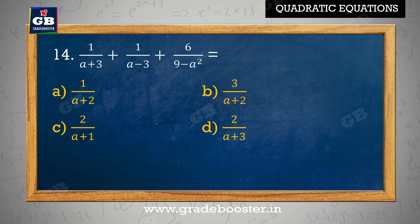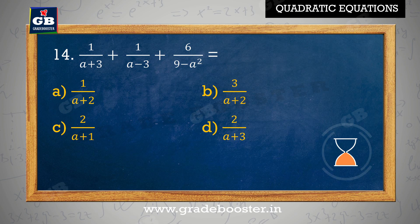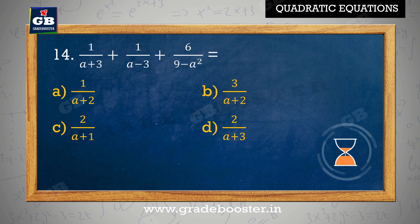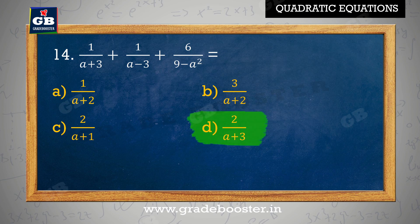Simplify: 1 by a plus 3 plus 1 by a minus 3 plus 6 by 9 minus a square equal to: A. 1 by a plus 2, B. 3 by a plus 2, C. 2 by a plus 1, D. 2 by a plus 3.